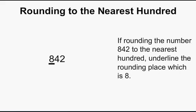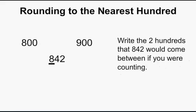If rounding the number 842 to the nearest hundred, underline the rounding place, which is 8, because 8 is in the hundreds place. Write the two hundreds that 842 would come between if you were counting. If you get confused about which two hundreds a number comes between, look at the number you underline — that's your first hundred. A hundred more than that is your second hundred.